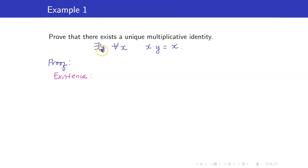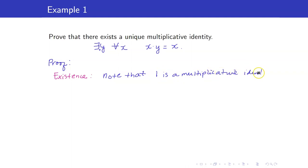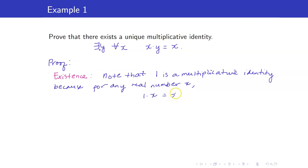For the existence part, our multiplicative identity is 1. I will say that 1 is a multiplicative identity, because for any real number x, 1 times x, which equals x times 1, equals x. In this paragraph, I just showed that 1 satisfies the property of being a multiplicative identity.